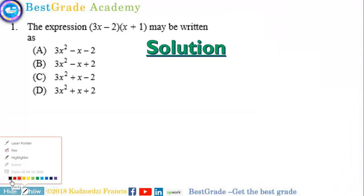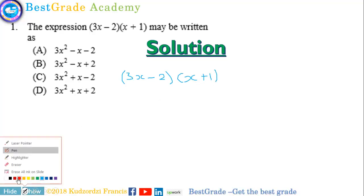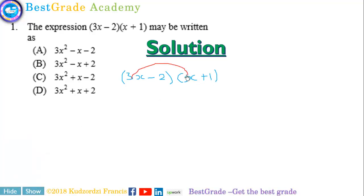This is the first question. We want to find the expression that is equivalent to this. So we expand. We have 3x minus 2 into x plus 1. We just have to expand the brackets. We multiply this by this and this by this again.